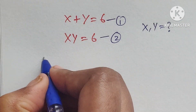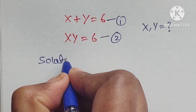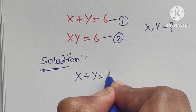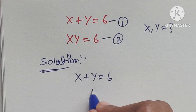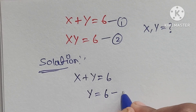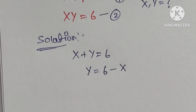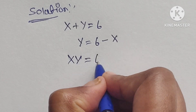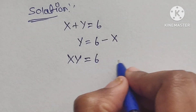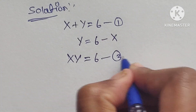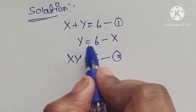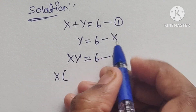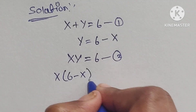From equation 1, we will get y equals 6 minus x. Now substituting into equation 2, x times y equals 6, we replace y with 6 minus x, so x times (6 minus x) equals 6.